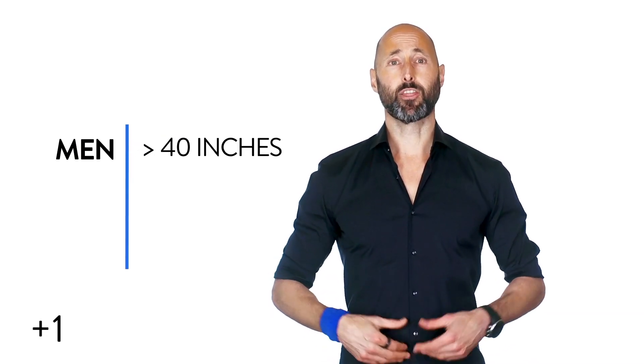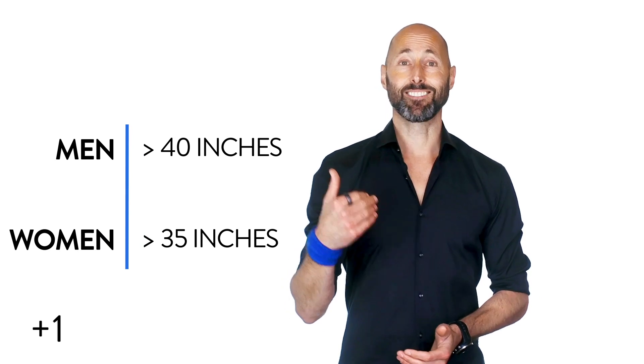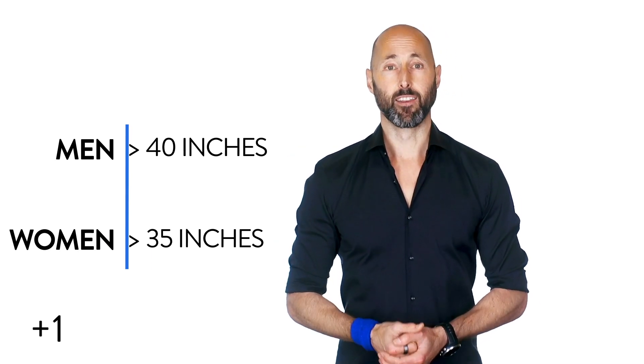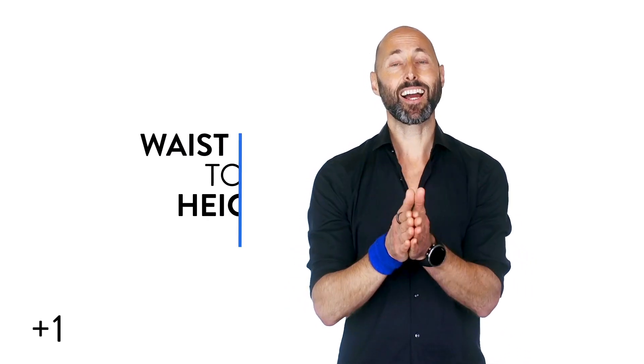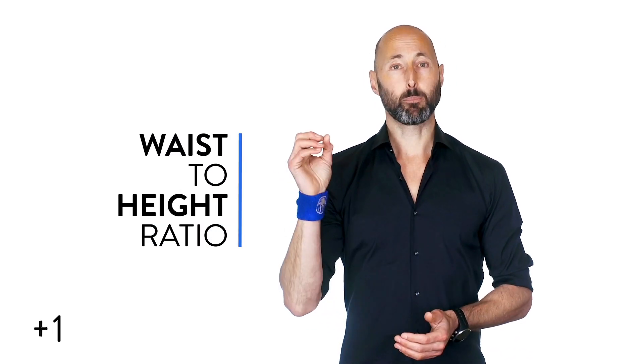He tells us that more than 40 inches for men and 35 inches for women is a likely indicator of visceral fat. But research is showing that there's an even more powerful predictor of morbidity than a simple waist circumference measure. It's called the waist-to-height ratio, or W-H-t-R.